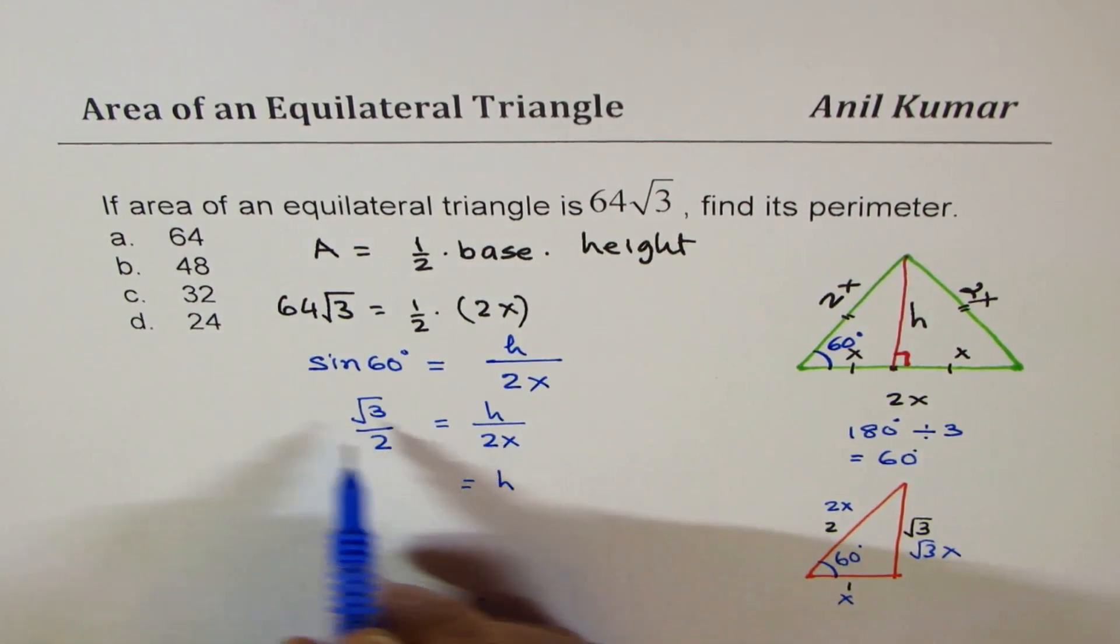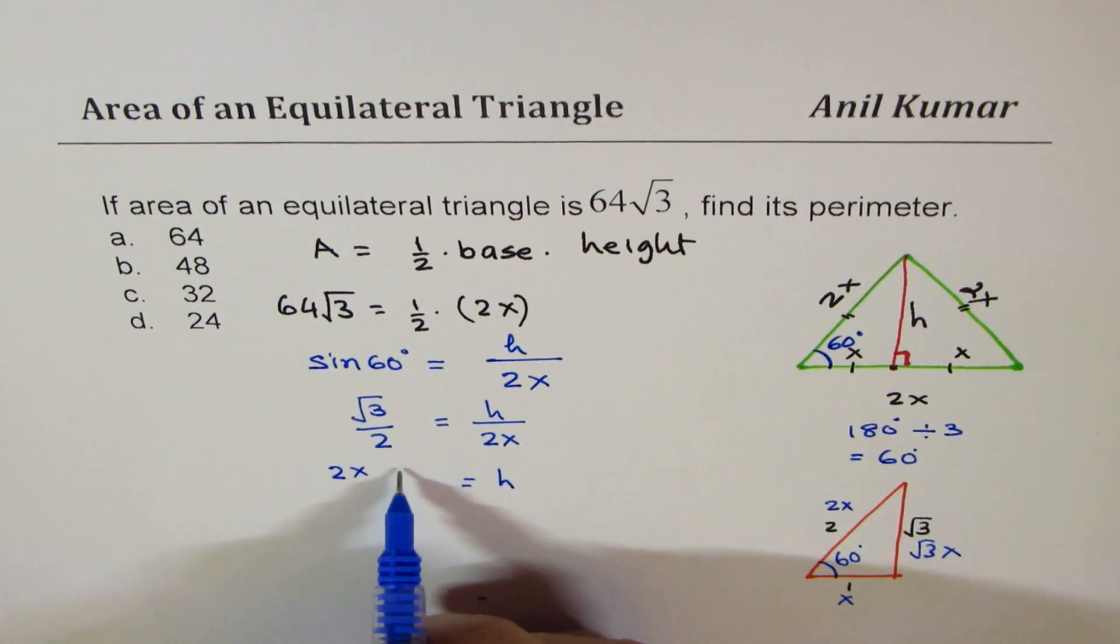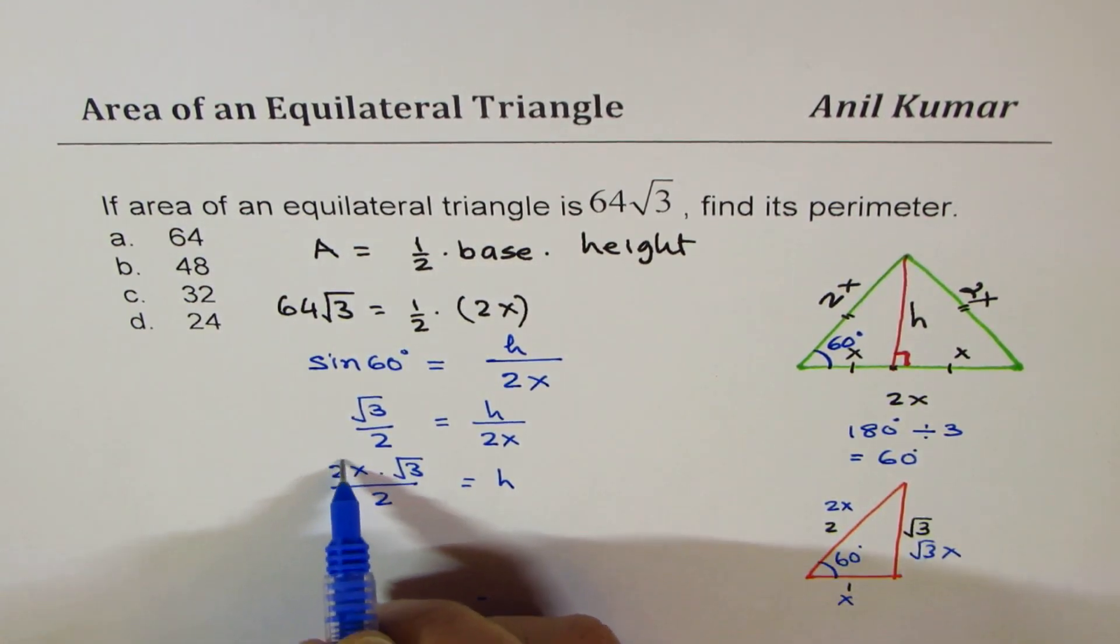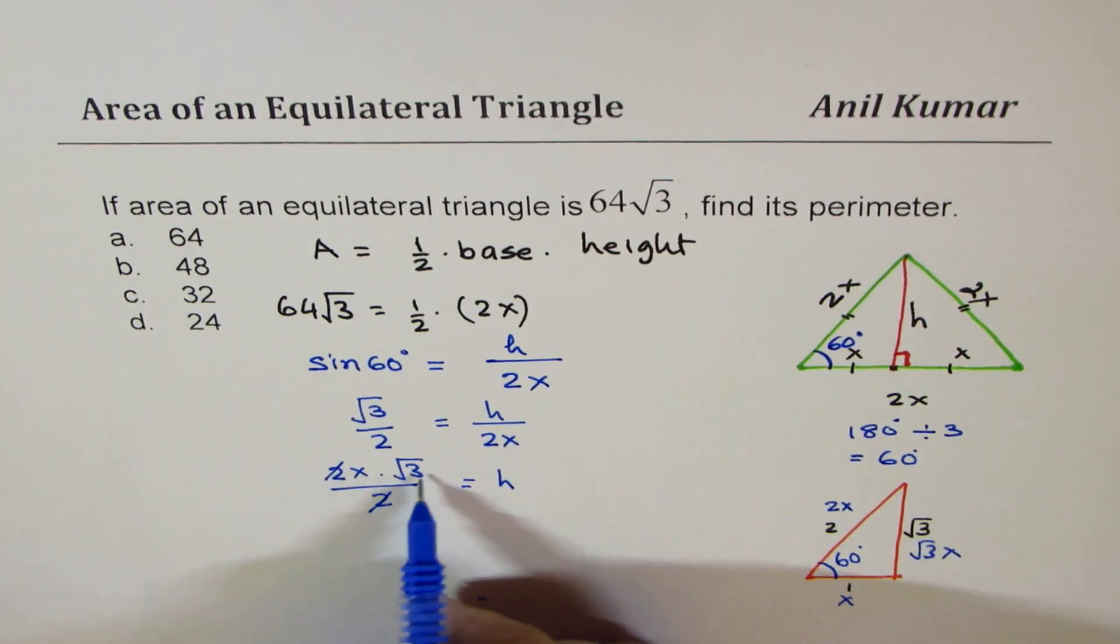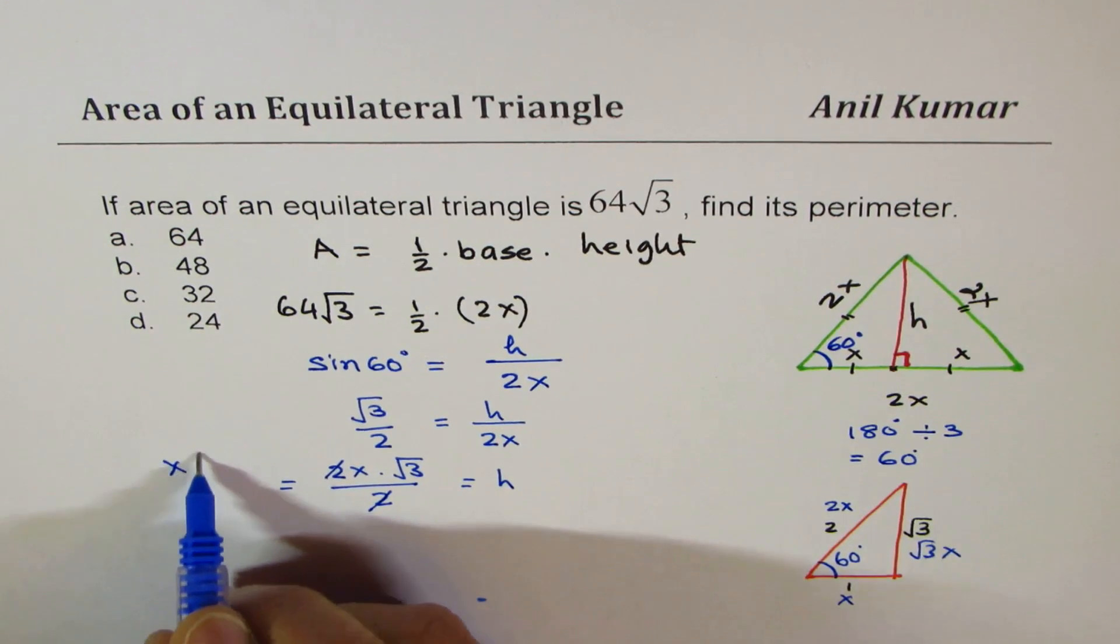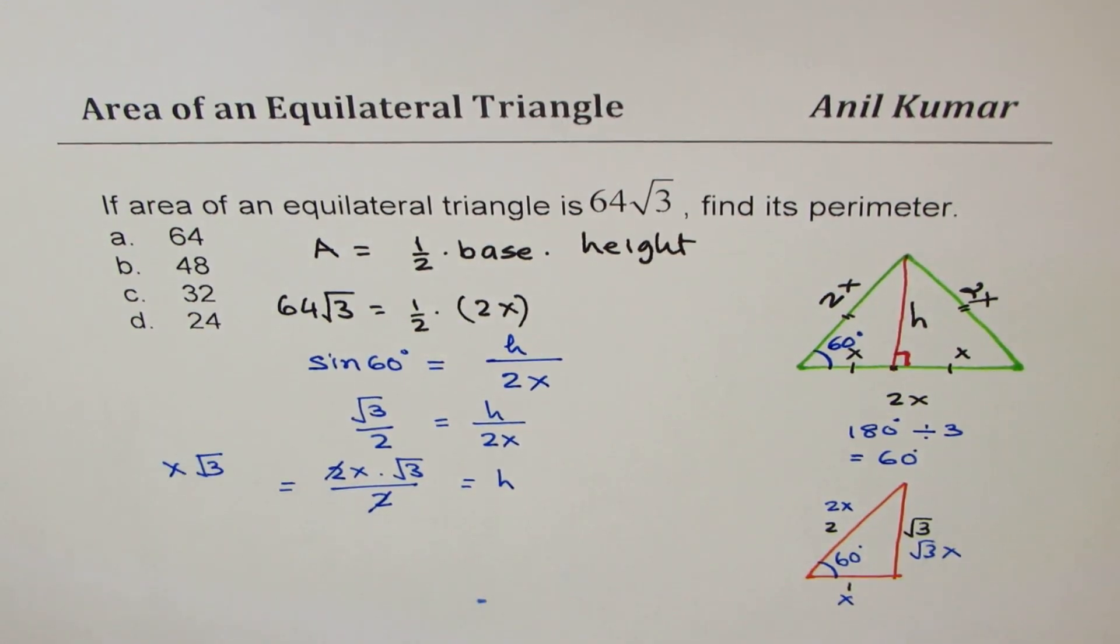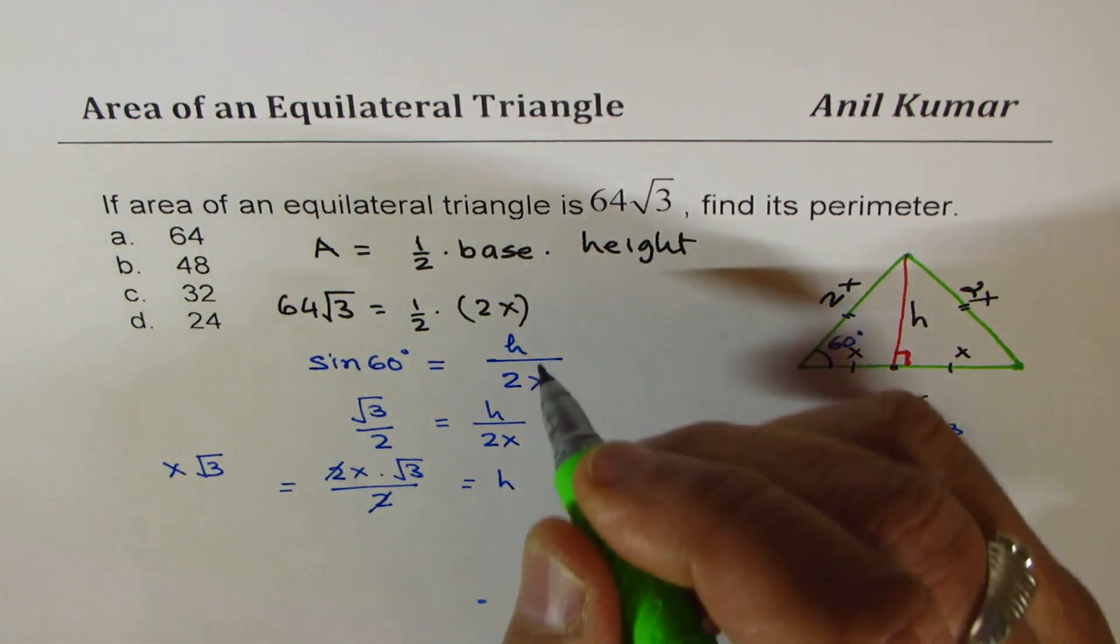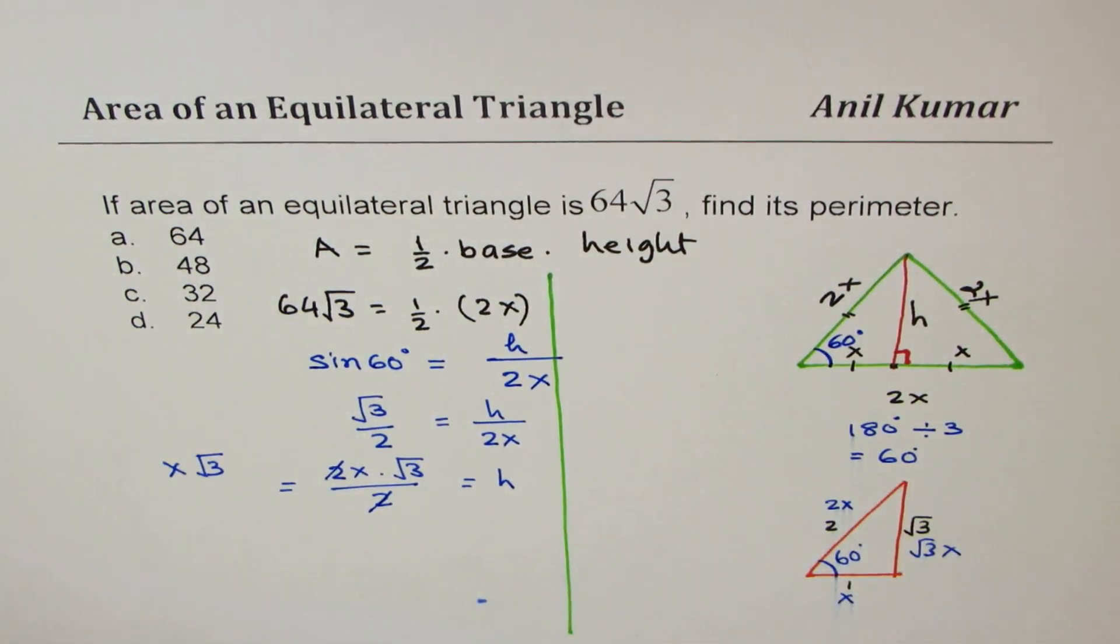So the height is equal to, we'll multiply this by 2x. So we get 2x square root 3 over 2, 2 and 2 cancel. So the height is x times square root 3. So we get height of x times square root 3. So that becomes the height for our case. Now it is simpler to calculate the values.